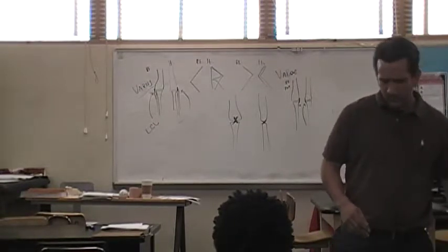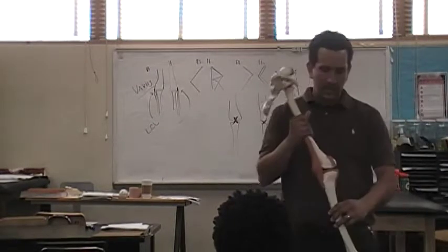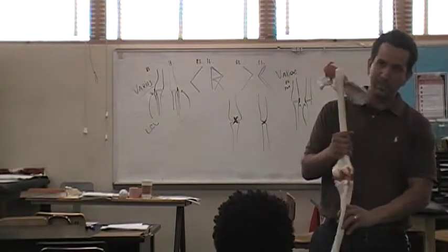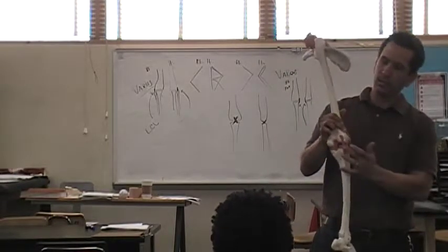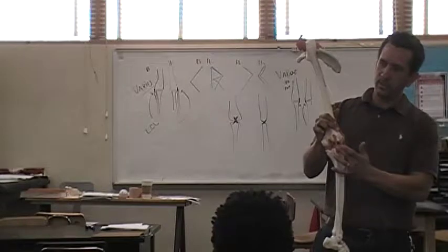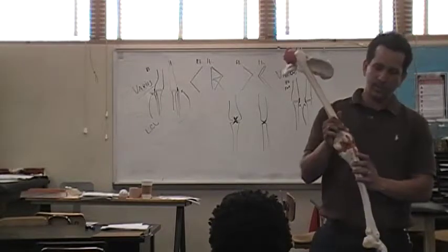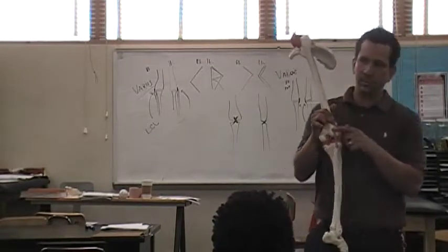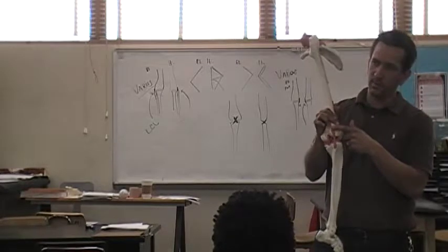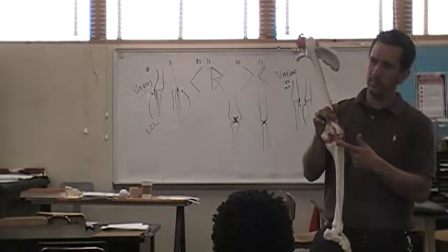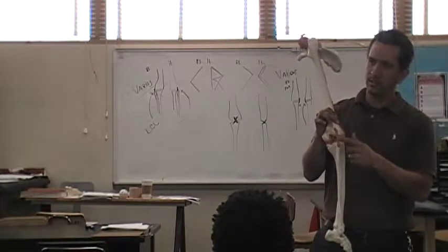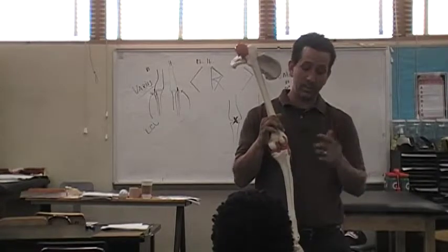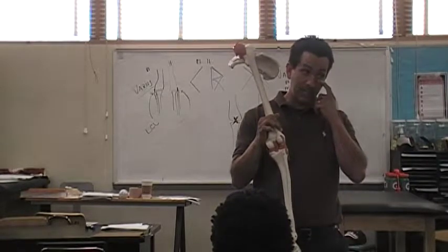Looking at the knee model, a ligament that's completely intact would be the lateral collateral ligament. This LCL is not torn — you can see it has complete consistency from the femur to the fibula. That would be an intact ligament, not a grade one tear.